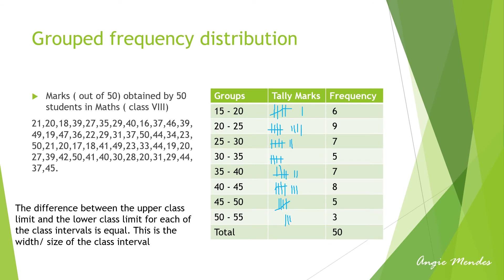Once we have formed the groups, we must remember that the difference between the upper class limit and the lower class limit must be equal for each class interval — the width must be equal. In this case, 20 minus 15 equals 5, and 25 minus 20 equals 5, so the class width is 5 throughout. Once we look at the raw data and apply our tally marks, we get the frequency of the data.